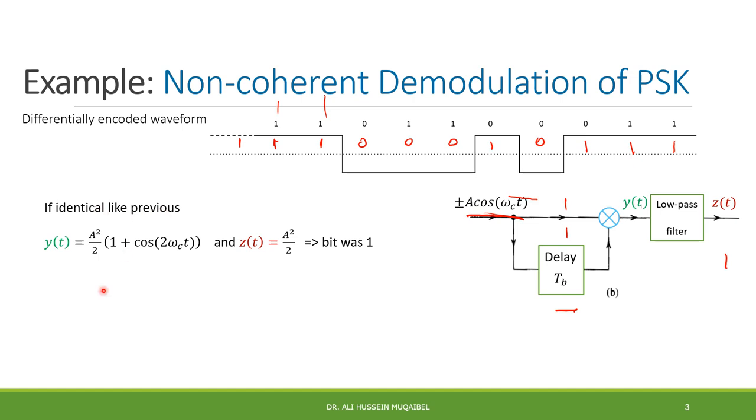And, of course, at the output of the low-pass filter, I have two terms. This term is high frequency, so it's going to cancel. And, I get a squared over 2. This is positive. It means the bit was 1.